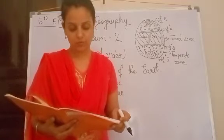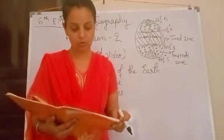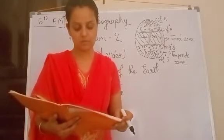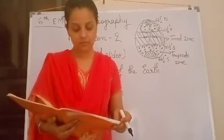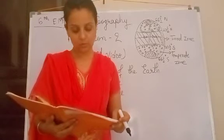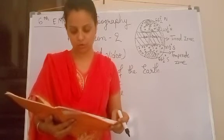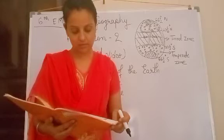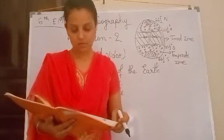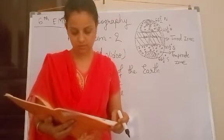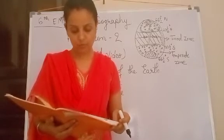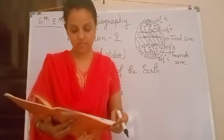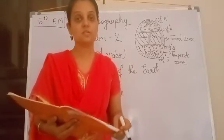Areas lying between the Arctic Circle and the North Pole in the Northern Hemisphere and the Antarctic Circle and the South Pole in the Southern Hemisphere are very cold. It is because here the sun does not rise much above the horizon. Therefore, its rays are always slanting and provide less heat.